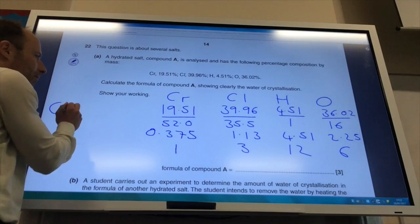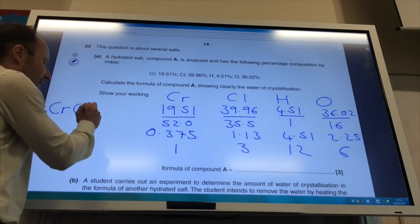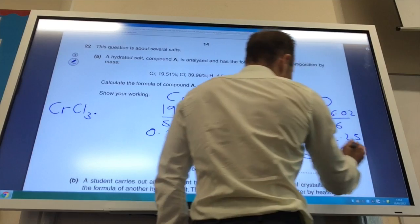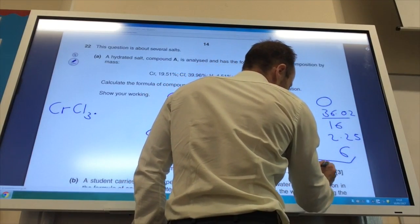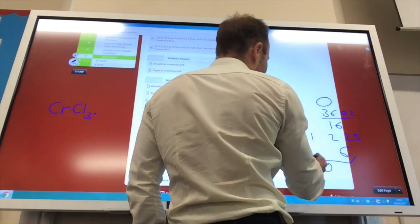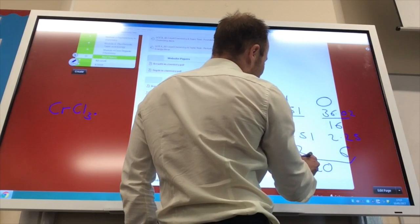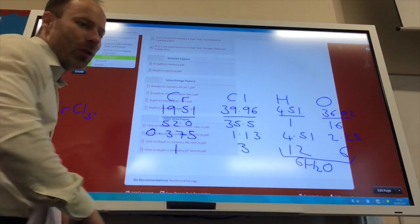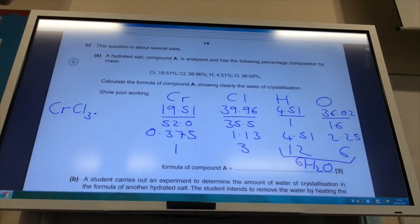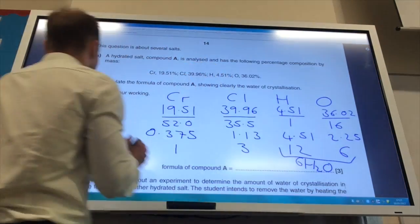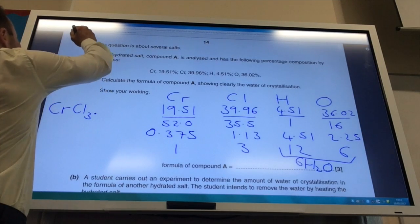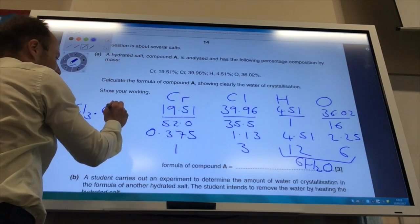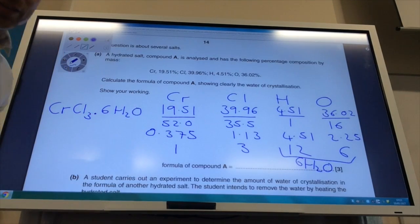So you've got chromium and chlorine. So CrCl3. Hopefully you can see that 6 hydrogens and... Oops, sorry about that. 6 hydrogens and... Sorry, 12 hydrogens and 6 oxygens is the same as 6H2O. Right, back to the right screen. So this is 6H2O, so it's going to be CrCl3·6H2O as your final answer.